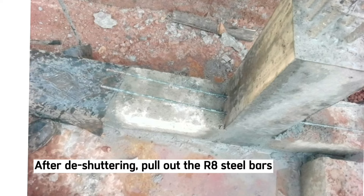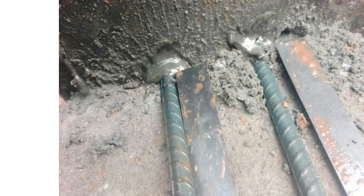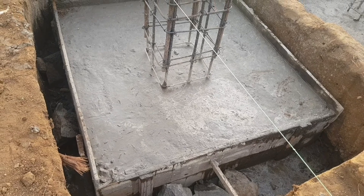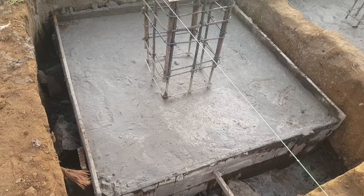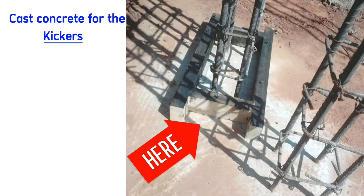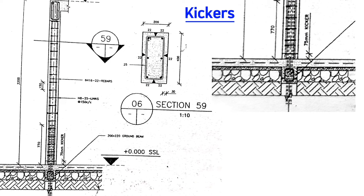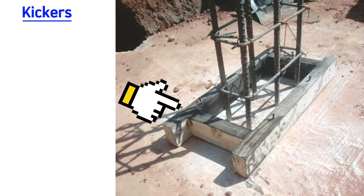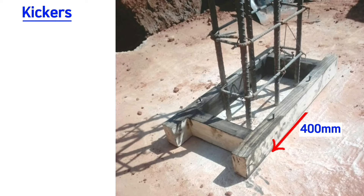After casting concrete for each slab, before casting concrete for another column, cast concrete for the kicker or column starter. For column C4, the drawing details a 75 millimeter kicker. The column dimensions are 400 by 200 millimeters. The timber formwork piece is 400 millimeters along the length, 200 millimeters along the width, and 75 millimeters in height.